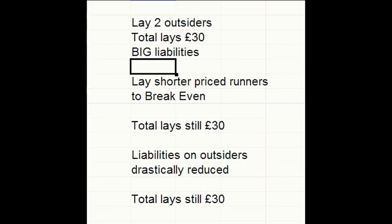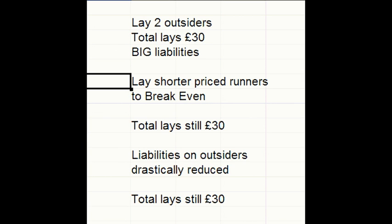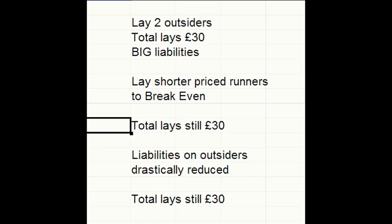We will now look at an example, get some odds off Betfair, and look to lay two outsiders in a horse race for a total lay stake of £30. That will give us big liabilities on those two horses. To get rid of those we will then lay some shorter price runners and break even on those using the spreadsheet. Our total lays will remain at £30 throughout, but putting lays on those shorter prices to break even will make our liabilities on the two outsiders a lot smaller.